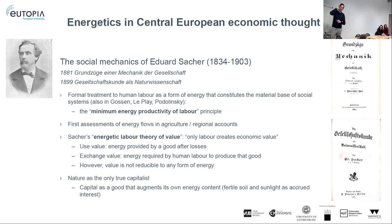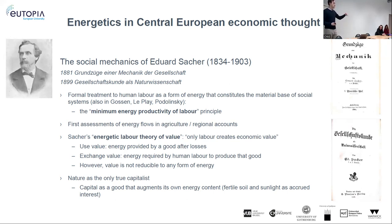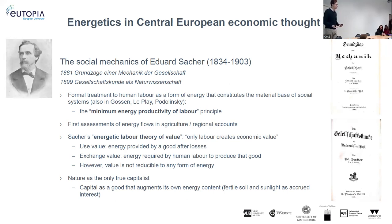Zaha was an Austrian professor of chemistry at a royal imperial teachers' institute in the Vienna region. The key thing in his work is the formal treatment of human labor as a form of energy that constitutes the material basis of social systems. Labor is seen as the main mechanism through which energy flows into the economic system. For any kind of labor, the energy appropriated from that labor must be higher than the energy actually used — if I pick up an apple, the energy I spend must be smaller than the energy contained in the apple, otherwise why do it?